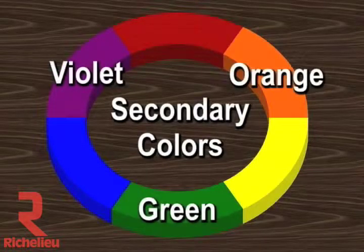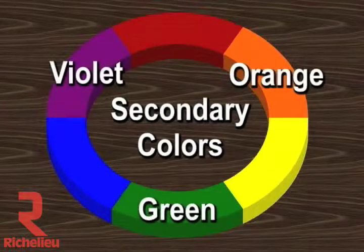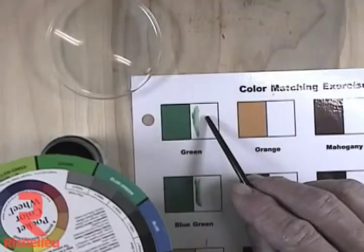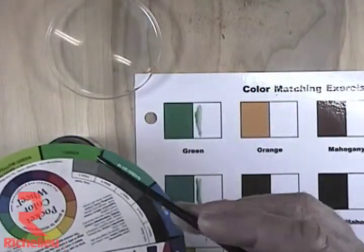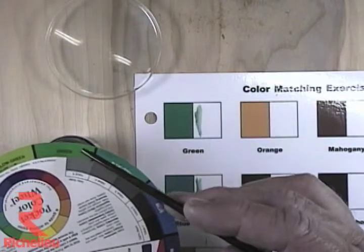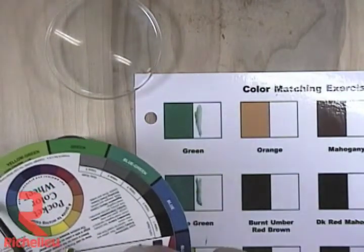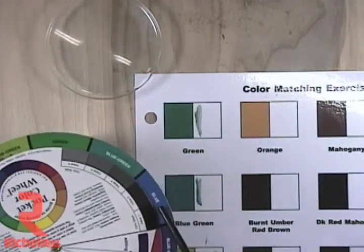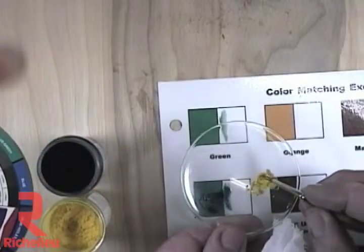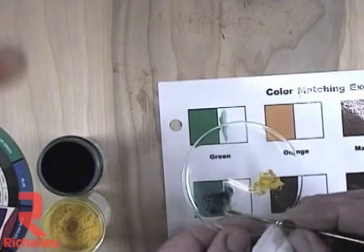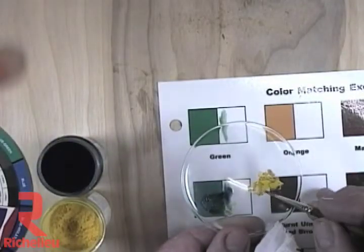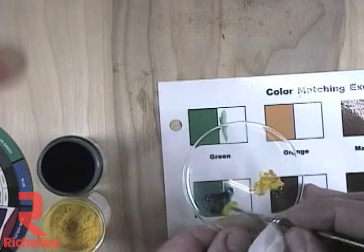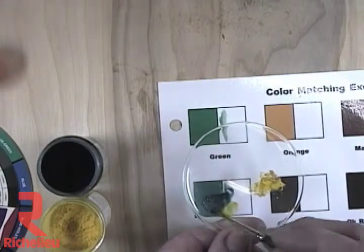Secondary colors are made from mixing theoretical equal amounts of two primary colors. Orange, green, and violet are the three secondary colors. We refer to the equal mixture of the primary colors as theoretical because, in the real world, it's hard to mix exactly equal amounts of any pigments due to intensity differences, weight differences, the amount of pigment versus the amount of solvent in any given colorant, and so on.